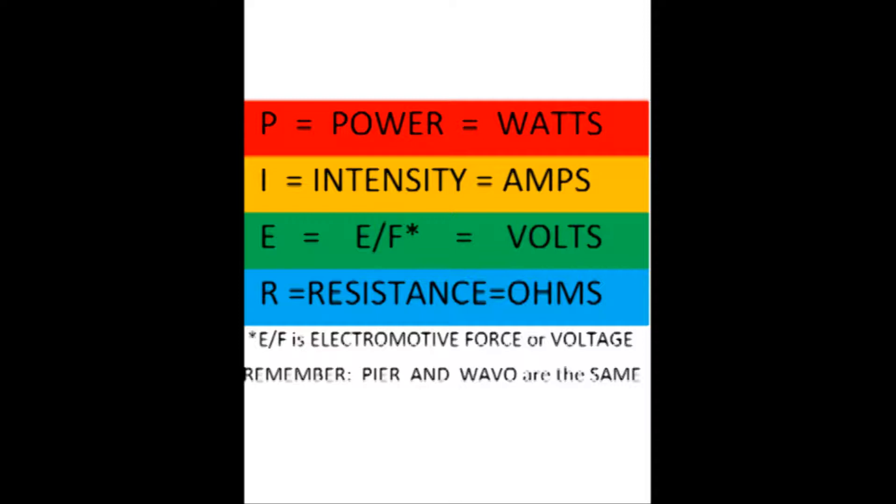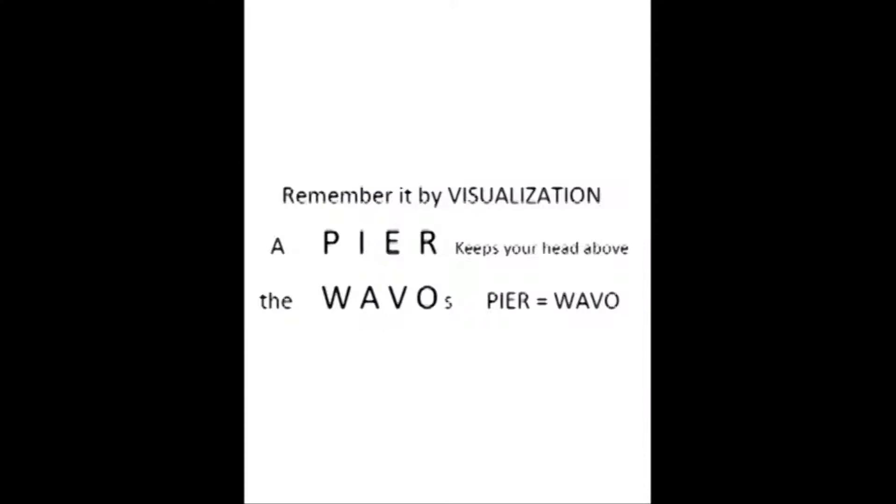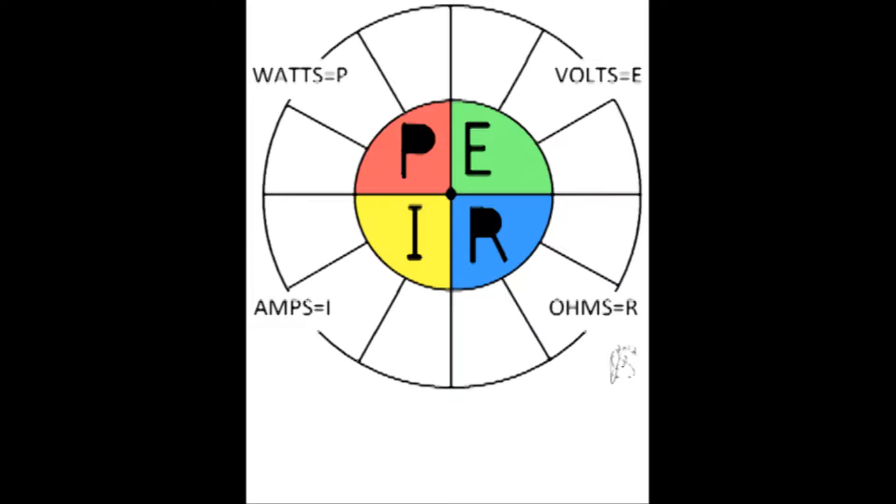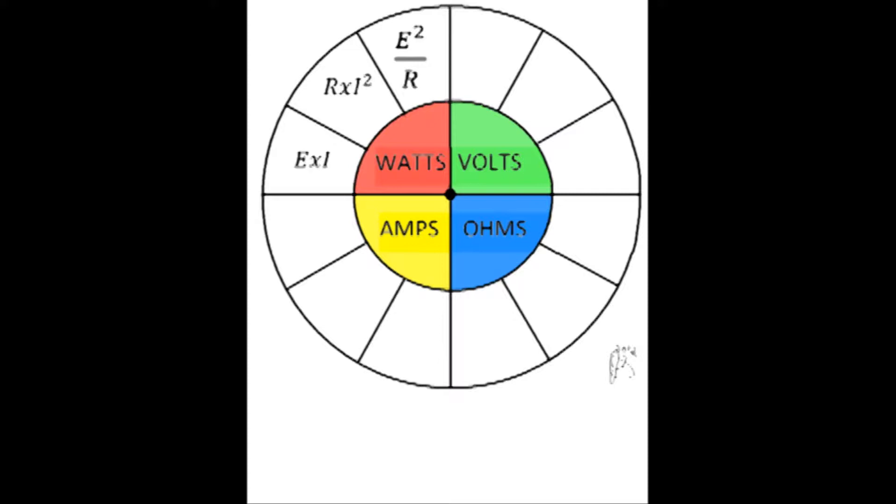Hence, you need to quickly learn to convert WAVO to PIR and PIR to WAVO. In order to use these formulas, remember to visualize the two words in parallel. Let's take a look at that pie chart again. As you can see, there are four main categories: watts, amps, volts, and ohms.